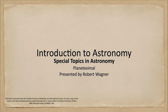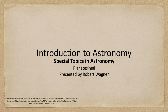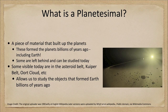Greetings and welcome to the introduction to astronomy. In this week's special topic in astronomy, we are going to discuss the planetesimal and what that means in astronomy. So what is a planetesimal? Well, a planetesimal is a bit of material that eventually built up into planets — it is the material that eventually formed the planets.